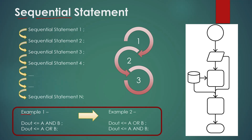Let's understand this with a simple example. In example 1, the first sequential statement is a logical AND of input A and input B, and then the next statement is a logical OR of input A and input B. In example 2, we reverse those statements — now the first sequential statement is logical OR and the second is logical AND. Example 1 will give you the function of an OR gate and example 2 will give you the function of an AND gate, because with sequential statements the second statement overrides the first statement since the output signal is the same. That means statement 1 will be ignored in both designs.